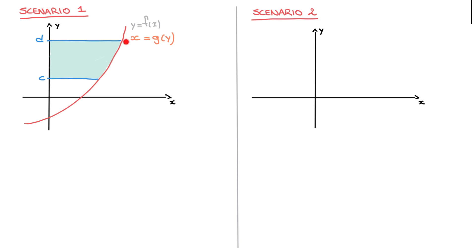Looking at this generic curve, if I were to replace y by c, then the output would be the x-coordinate of this point here — somewhere here on the x-axis. What makes this area correspond to Scenario 1 is the fact that all of the points along the curve between y equals to c and y equals to d have a positive x-coordinate. Scenario 1 corresponds to all of the x-coordinates of the points along the curve being greater than or equal to 0.